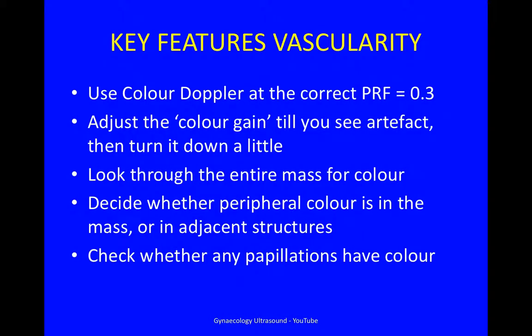The key features are that you use your colour Doppler at the correct PRF of 0.3. Adjust the colour gain until you see artefact, and then turn it down until you just lose that — that gives you the best sensitivity. Look through the entire mass looking for colour vascularity. If there is peripheral colour, decide whether it's in the mass or in adjacent structures. Check whether there are any papillations which have colour.